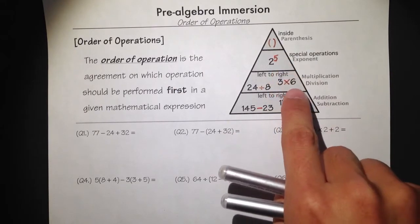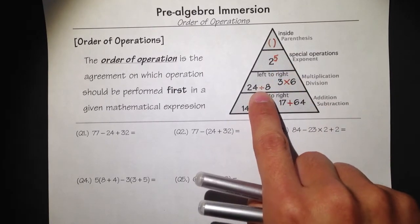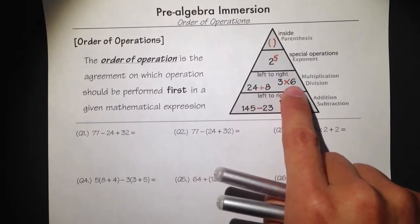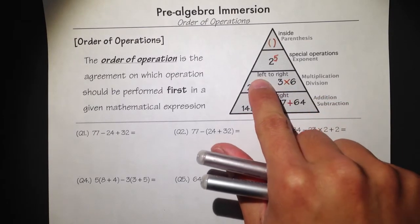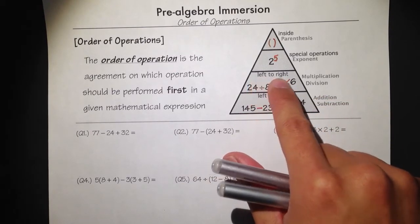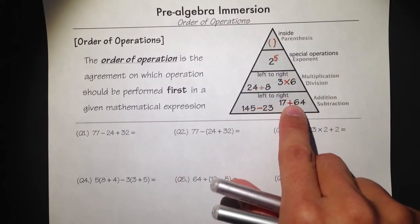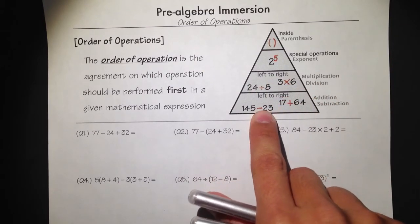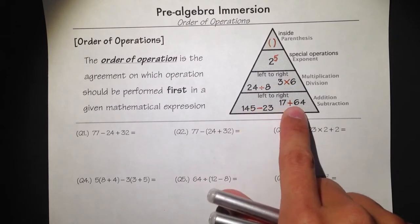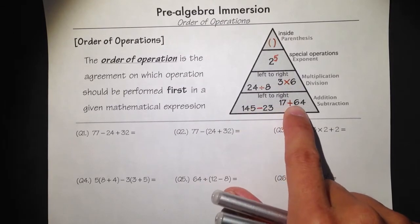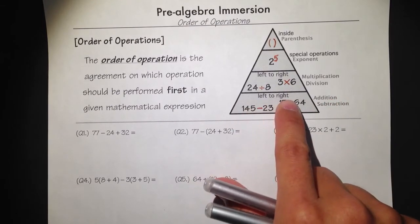Then you do multiplication or division. If you have division and multiplication in the same question, we just do this from left to right. Likewise, for addition and subtraction together, we just do it from left to right.